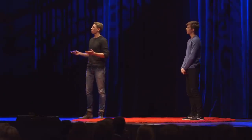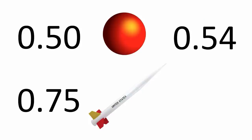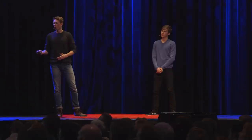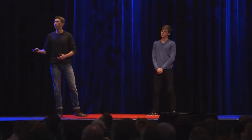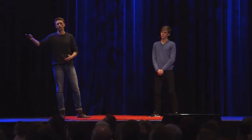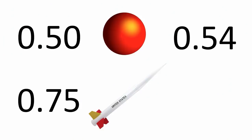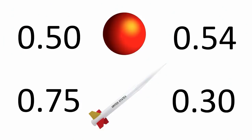We analyzed our data and came to some interesting results. For the ball, which should have 0.50, we got 0.54 — very close. And for our rockets, which NASA claimed should have 0.75, we got 0.30, which is much more reasonable.